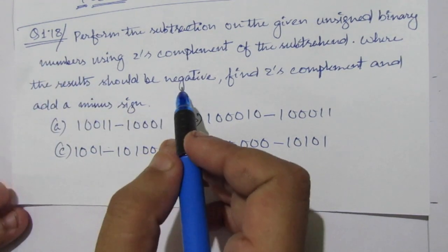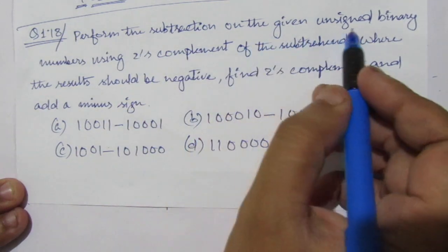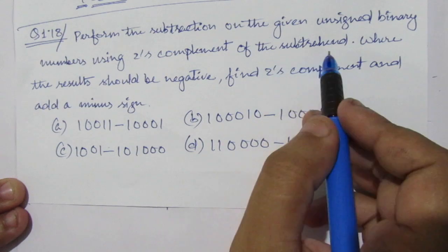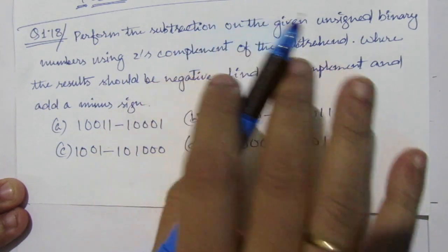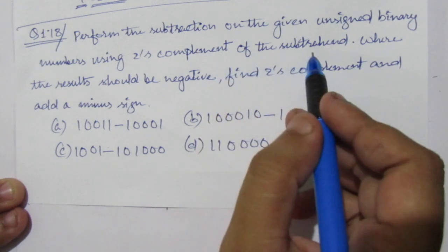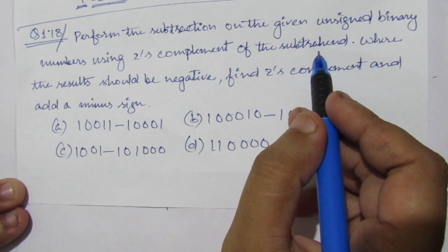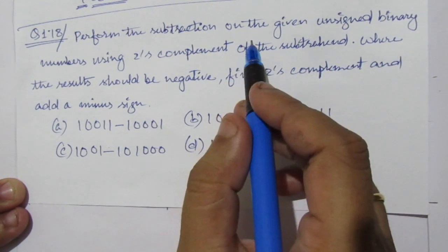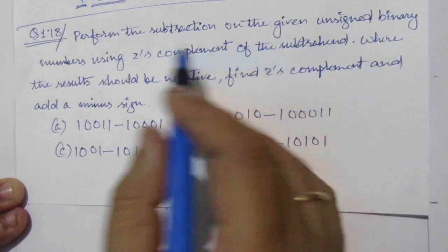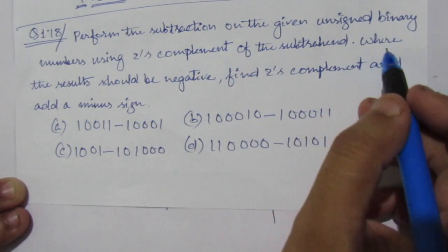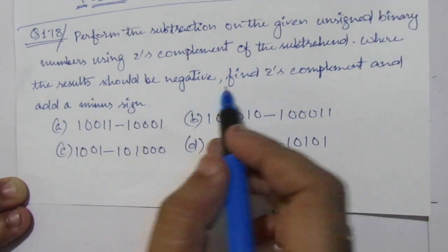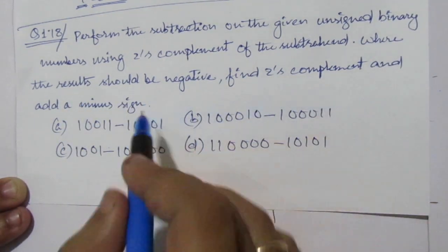The problem is: perform the subtraction on the given unsigned binary numbers using the 2's complement of the subtrahend. You have to find out the 2's complement of the subtrahend and add it to the minuend. The result will be the difference of the two numbers. Where the result should be negative, find the 2's complement and add a minus sign.